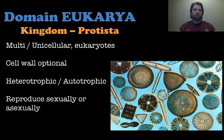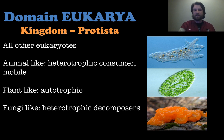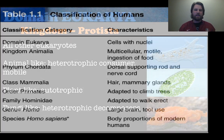Finally, kingdom protista. These are either multicellular or single-celled eukaryotes. Cell walls are optional — some don't necessarily have one. They are either heterotrophic or autotrophic, and they reproduce sexually or asexually. Protists seem to have characteristics of many different other kingdoms. They are all the other eukaryotes that are not an animal, a plant, or a fungus. Some are animal-like — heterotrophic consumers that are mobile. Some are plant-like because they're autotrophic. Some are fungi-like because they're heterotrophic decomposers. This makes us wonder how long the protist kingdom will actually remain, since many protists could fit into other kingdoms.